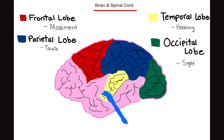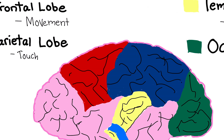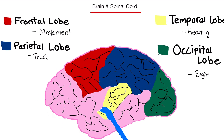The frontal lobe is this red part right here. The frontal lobe is for movement. So any bodily movement you're doing — say you want to move your arm, you want to move your leg — all the information needs to be processed in the frontal lobe.